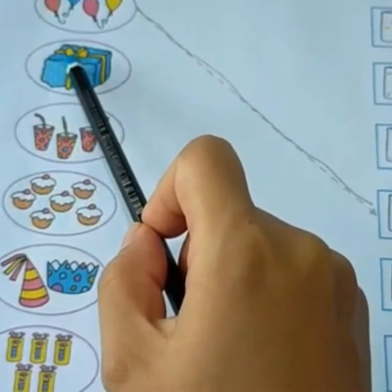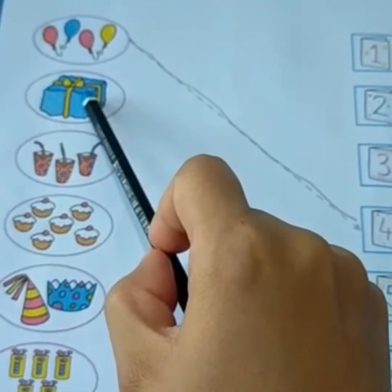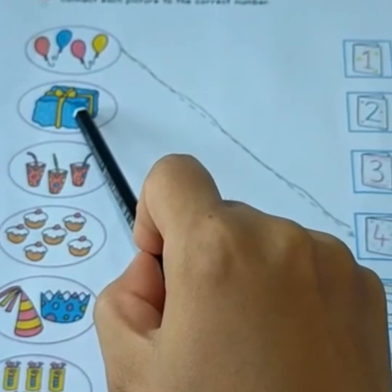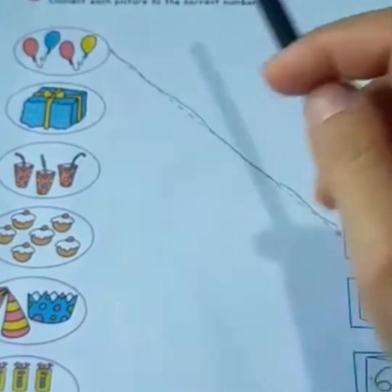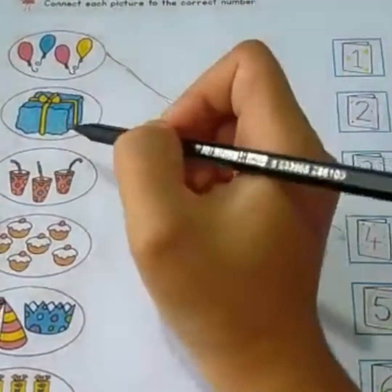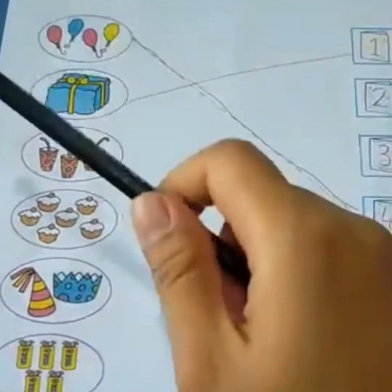Now, picture number 3. Now, picture number 2. Say present. How many presents? Say 1. Is this number 1? Yes, yes, yes, yes. Draw the line. Yes, yes, yes.